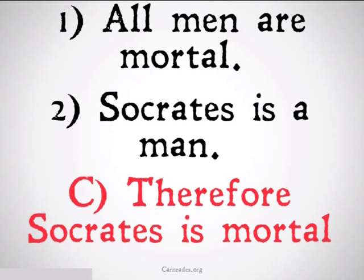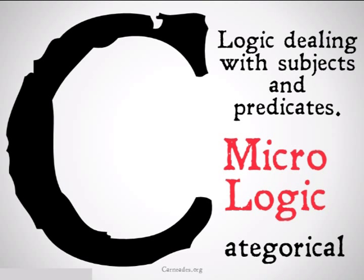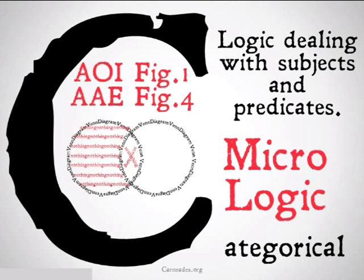There's nothing we can do with the tools from propositional logic, yet it's clearly a valid argument, so we need some rules of logic to show that it's valid. That's where categorical logic comes into play. Categorical logic is logic dealing with subjects and predicates — it's kind of the micro-logic if propositional logic is the macro-logic.